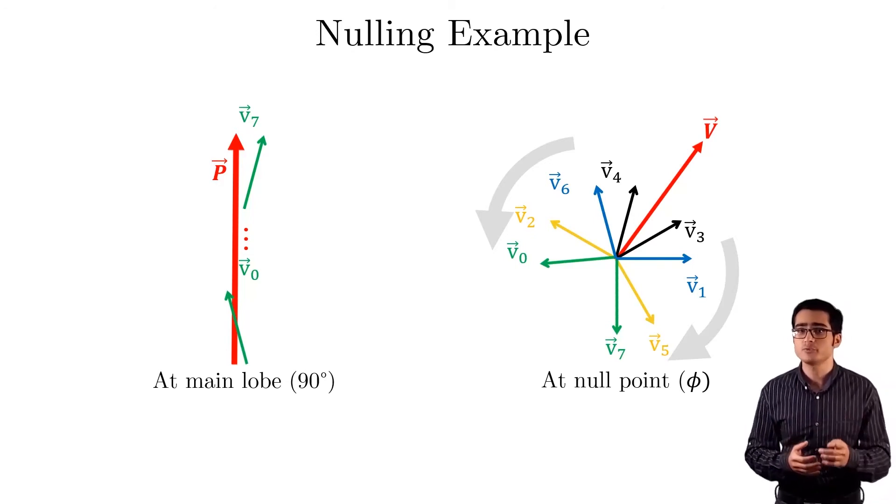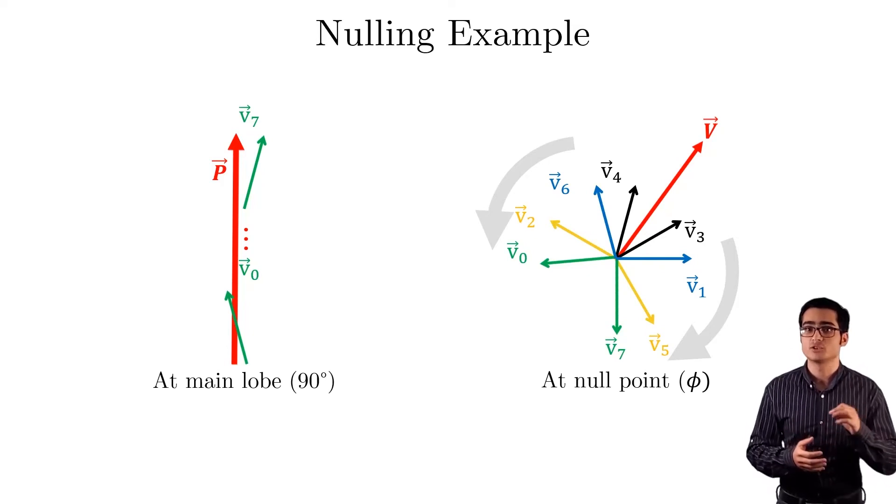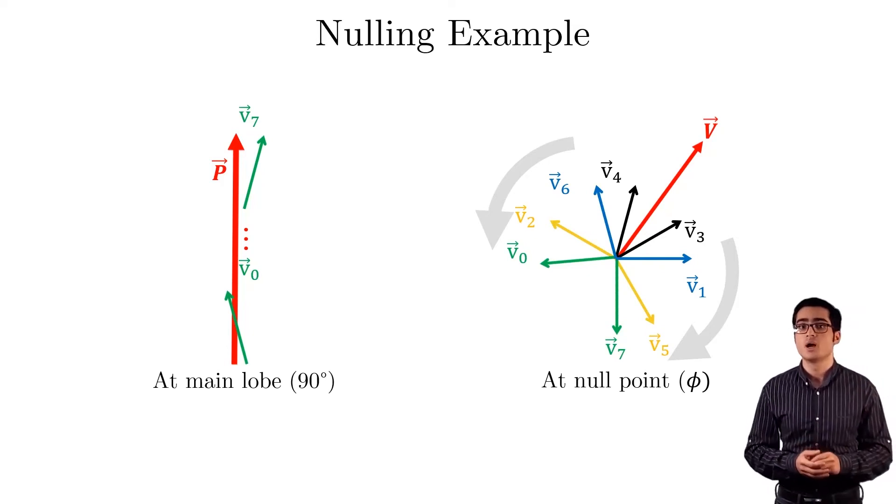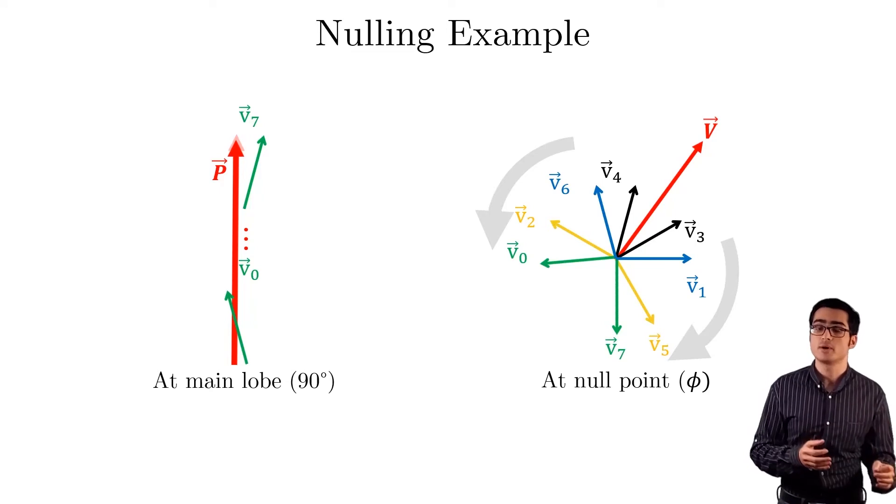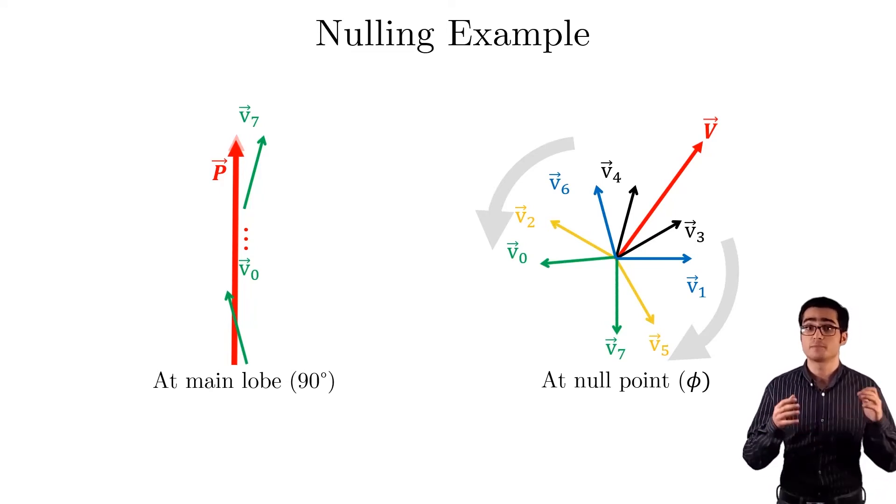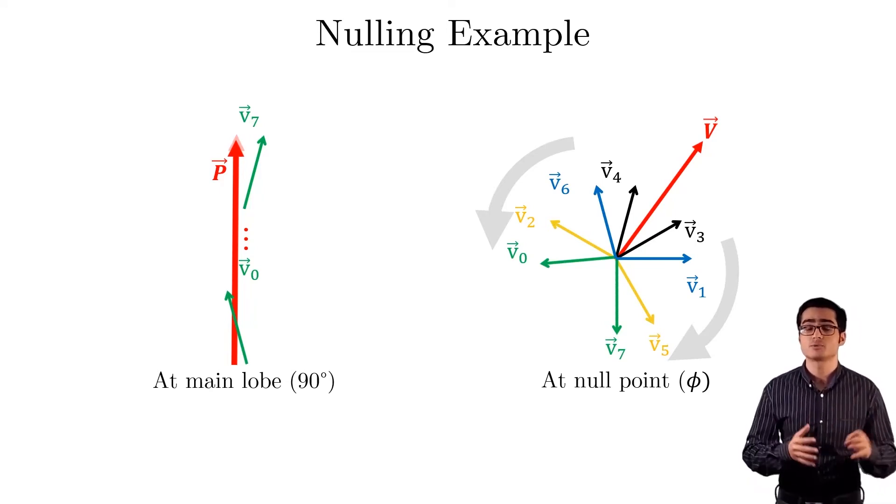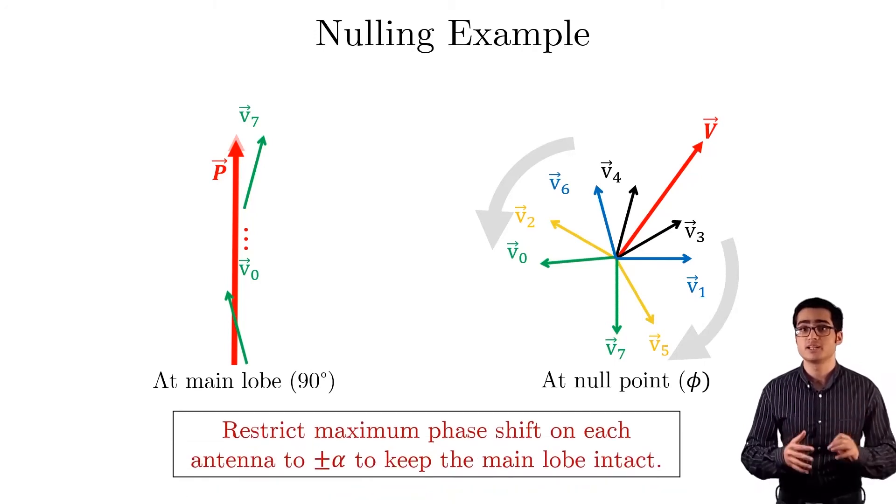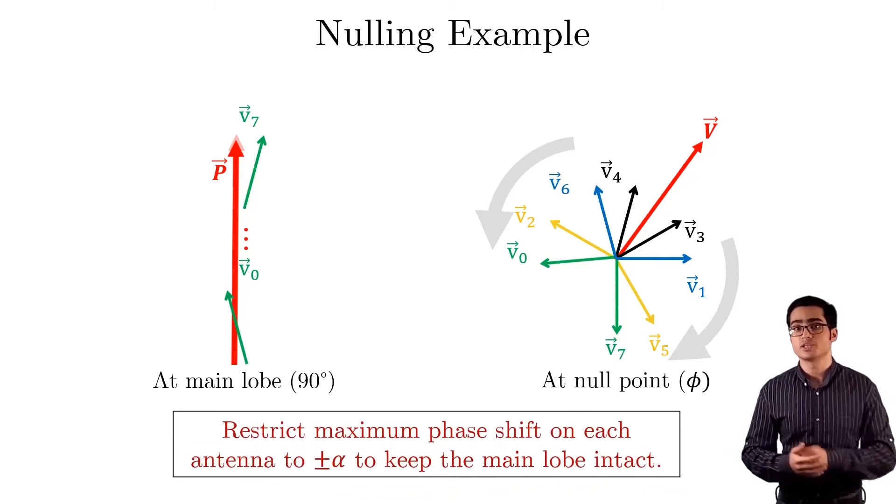However, this phase shift will also rotate the vi's at the direction of the main lobe. To avoid loss at the main lobe, in other words to preserve the vector p, we restrict the maximum phase shift at each antenna to plus minus alpha, to only allow for small rotations.